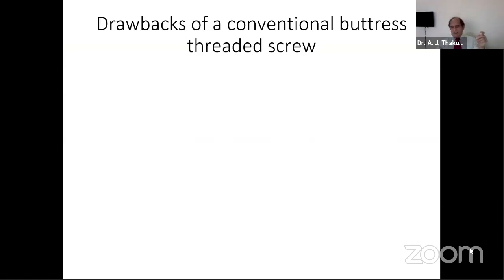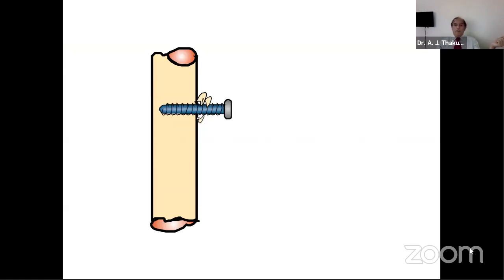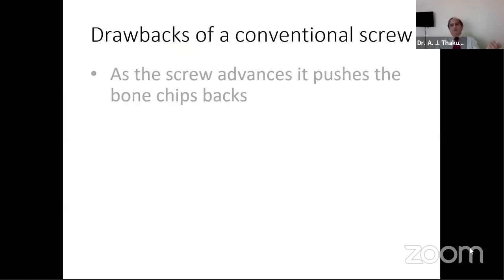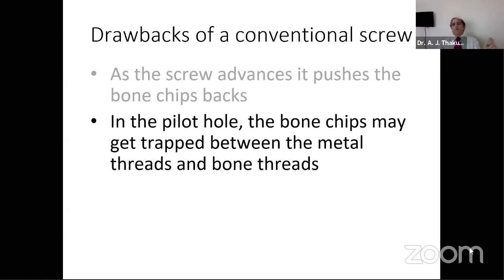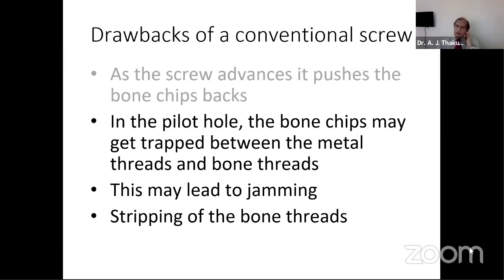The drawbacks of the conventional buttress thread: during insertion, as the screw advances, bone chips are pushed back and sometimes it gets jammed. Bone chips come out towards the insertion side, some get jammed, and you'd recall instances of having to back up the screw, push some saline, clear the debris, and then the screw would go easily. In the pilot hole, bone chips trapped between the metal and thread may cause jamming. If jammed, one may inadvertently apply higher torque and strip the bone threads, making the whole exercise futile.